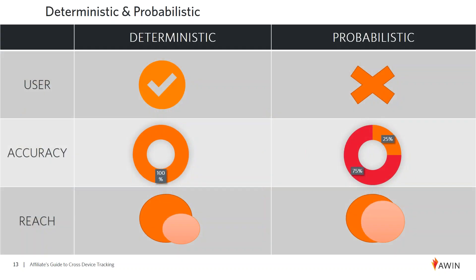When you look at them head to head you can see the strengths and weaknesses, and this is why AWIN has chosen to go with the deterministic method. By using deterministic, we are certain the right user is being tracked with 100% accuracy. Though some probabilistic methods are accurate — usually in the 25–75% range, and some may even reach 100% — it's much more difficult to verify the actual user. Since we are rewarding publishers based on results, we didn't want to risk asking merchants to pay for something we couldn't absolutely confirm was a true sale belonging to affiliate marketing.